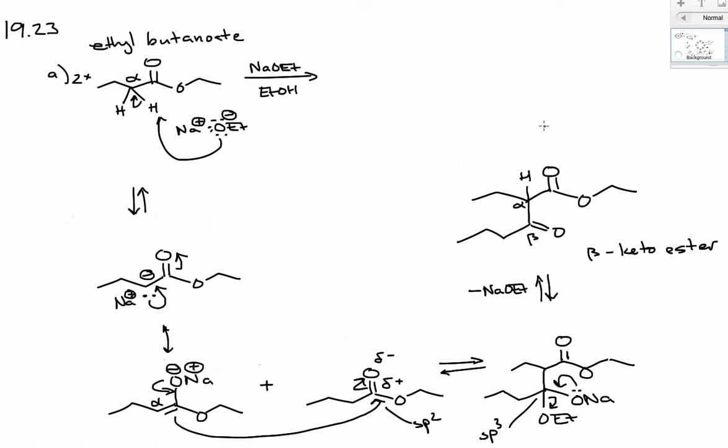The actual driving force to get this reaction funneled from the equilibrium is the deprotonation of that alpha hydrogen. Remember that alpha hydrogen has a pKa of approximately 10. Once you deprotonate that you end up with this enolate structure that is actually fairly stable.